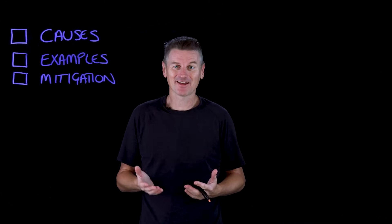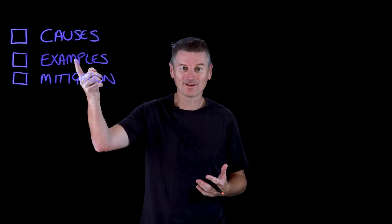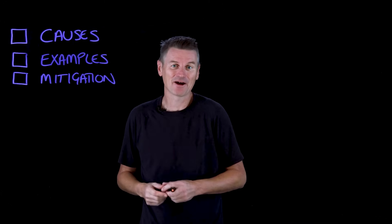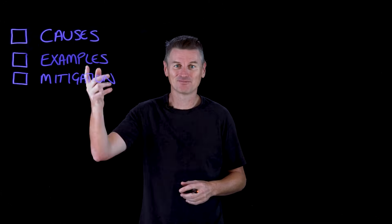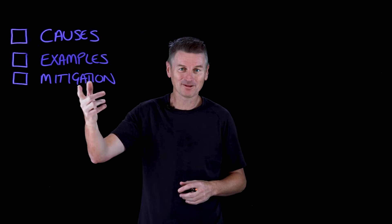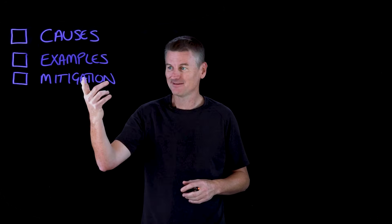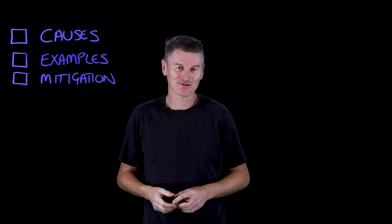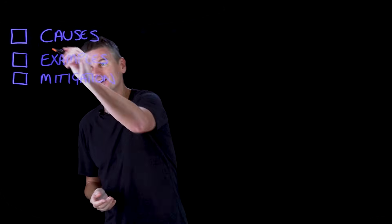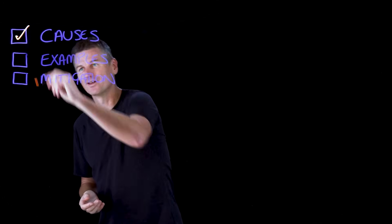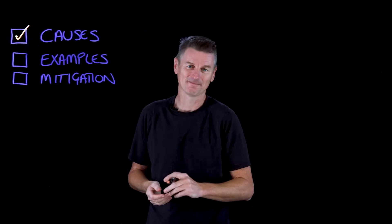So let's take a look at the causes of algorithmic bias, some real-world examples, and a mitigation strategy. And let's get started with causes.